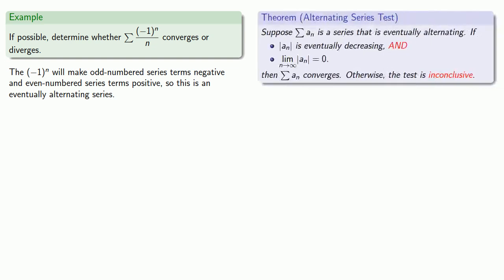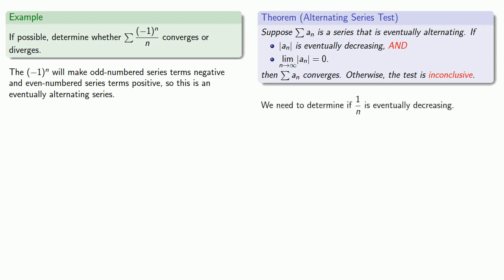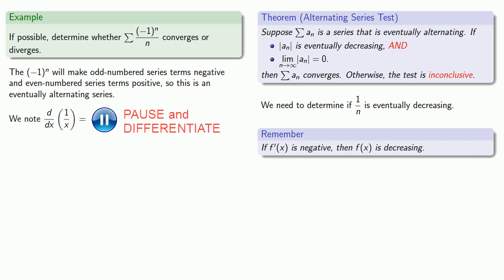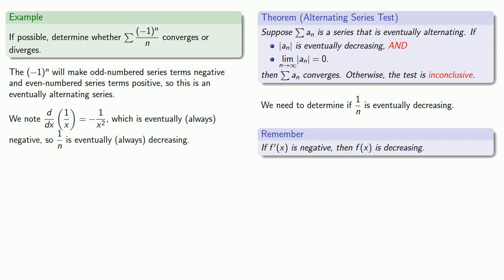First we need to determine whether the terms of our series are eventually decreasing. The (-1)^n may make things a little more difficult, but fortunately we only need to check whether the absolute value of the terms is eventually decreasing, so the (-1)^n can be ignored. We need to determine if 1/n is eventually decreasing. Since the derivative is always negative, 1/n is always decreasing.